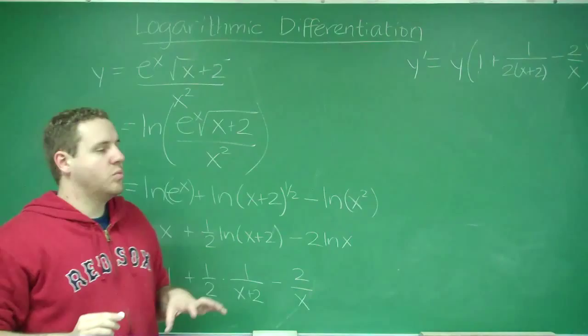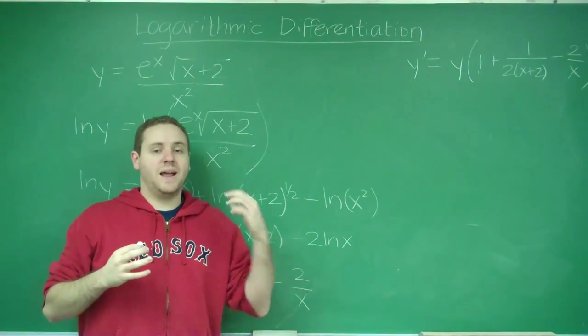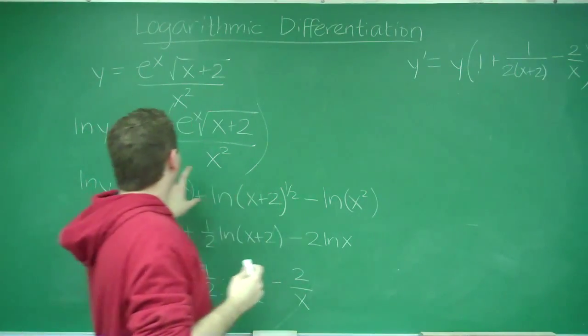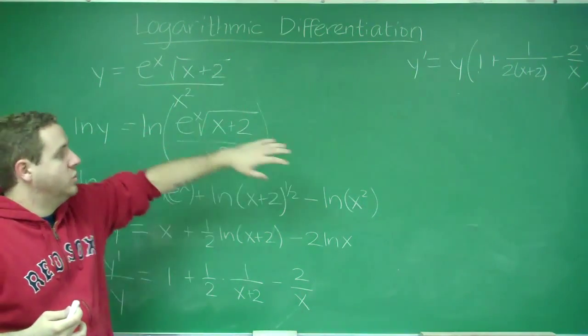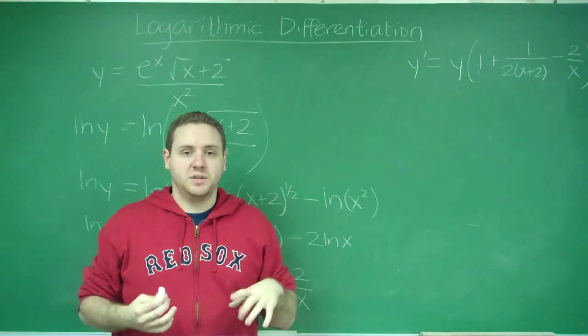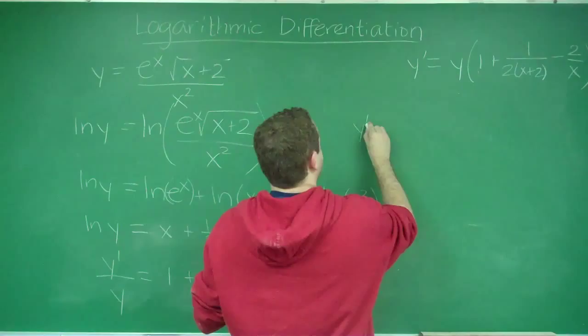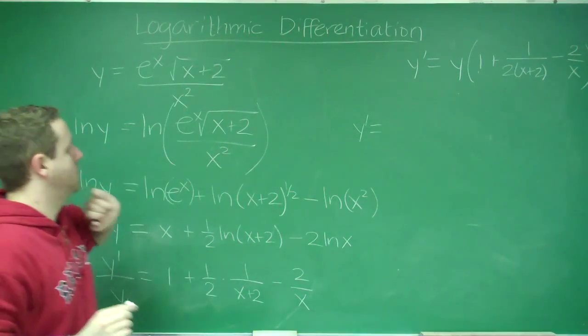And remember just like in the one we did when you had a variable in your exponent and your base, our function started out only as a function of x. We want our derivative to only be a function of x so you need to plug back in for y. So finally, instead of y, we need to write this entire term.